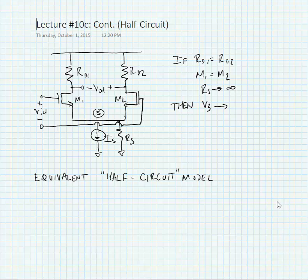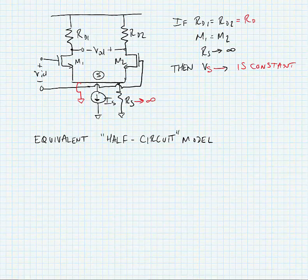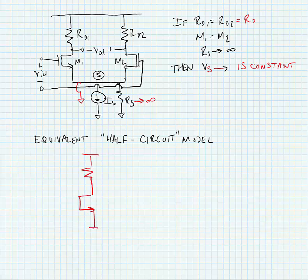We can make analysis a bit simpler with one assumption. If RD1 equals RD2 equals RD, and M1 equals M2, and the source resistance of the tail current source goes to infinity, then VS — the source node between M1 and M2 — is constant. If it's constant, we can treat it as a virtual ground, so we place a ground at that node. This allows us to separate the circuit into an equivalent half circuit.